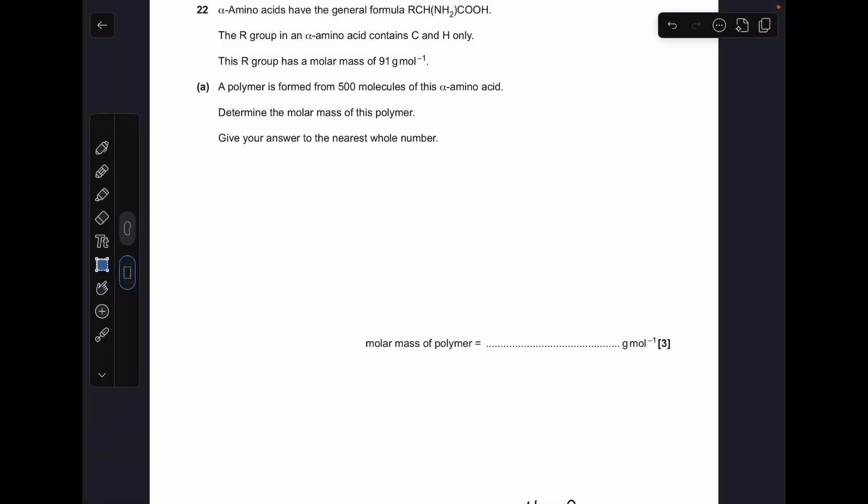So part A, we've got to work out the MR of the polymer, it's made from 500 molecules of this alpha amino acid. So the first thing I'm going to do is work out the MR of the amino acid. So that's coming out at 165.